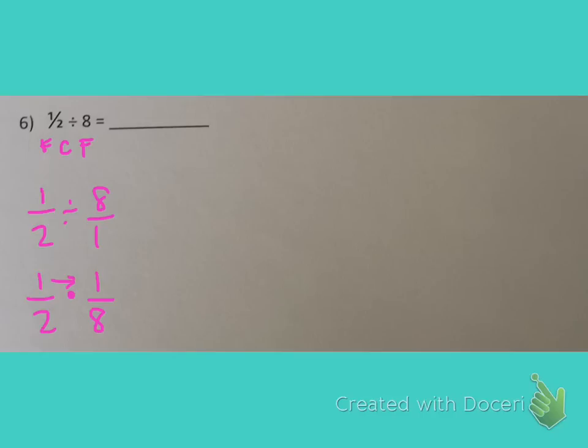So we'll do 1 times 1. And that gives us a numerator of 1. And then we do 2 times 8 which gives us a denominator of 16. So the answer here is 1 sixteenth.